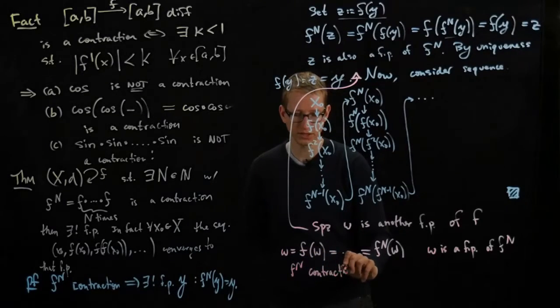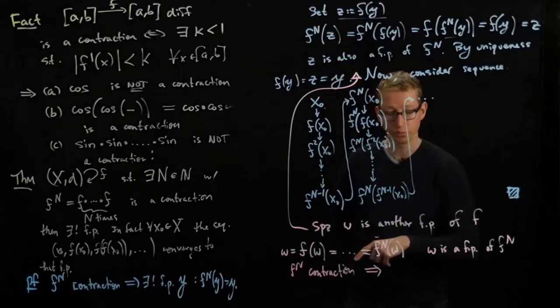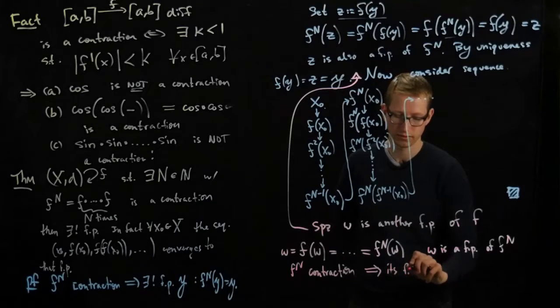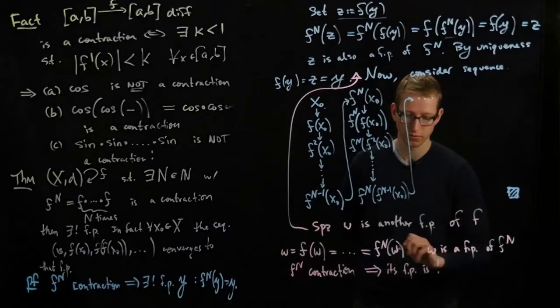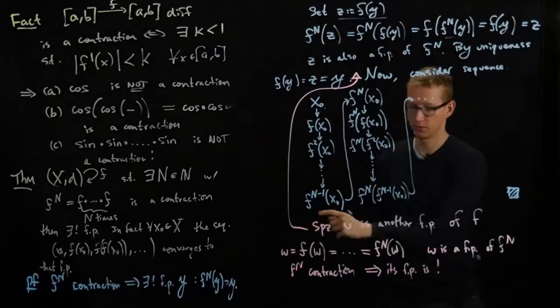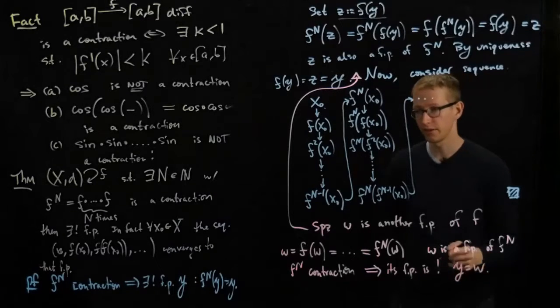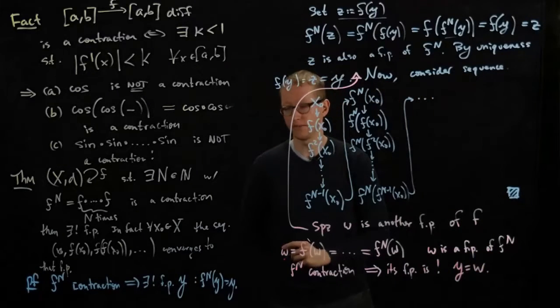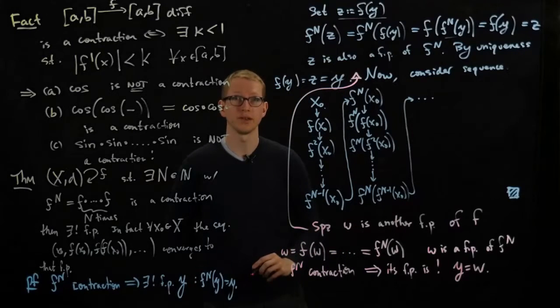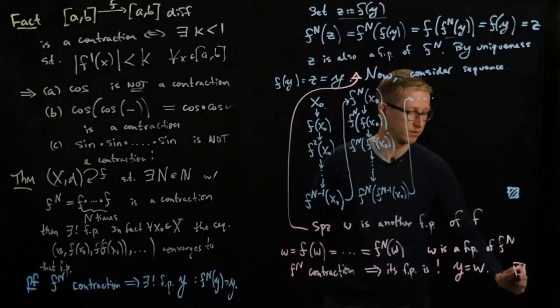And by the contraction mapping theorem from before, that implies that its fixed point is also unique. And because we already have a fixed point of f n that's y, this implies that y equals w, and therefore the only fixed point of f is indeed that fixed point of the nth iterate of f as well. And so that actually ends the proof of this theorem.